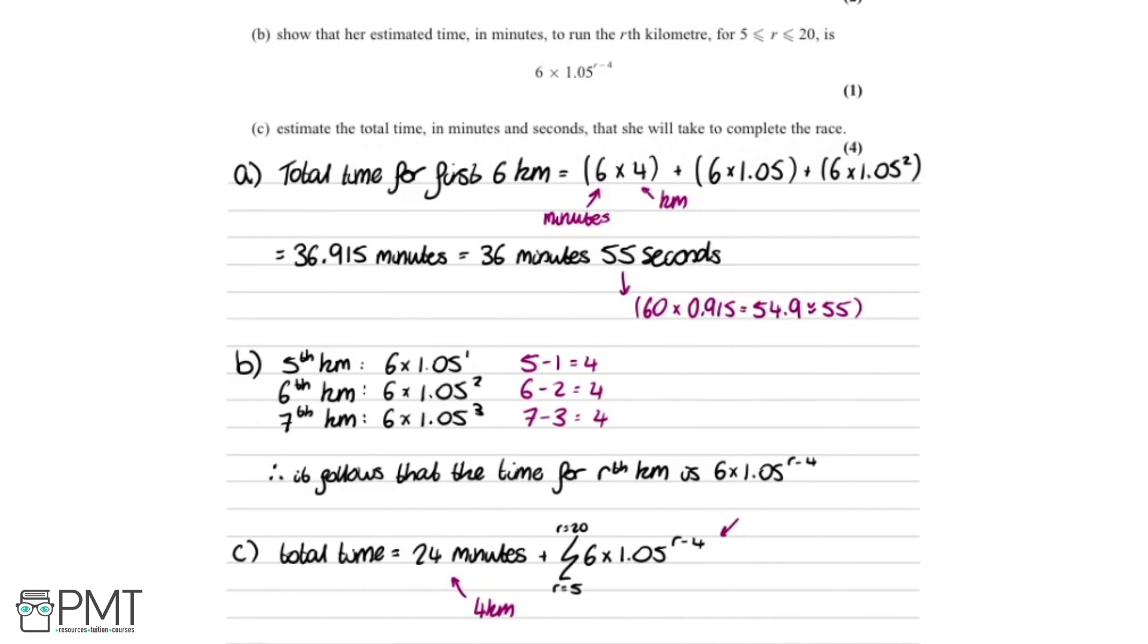So now the last thing to do is evaluate all this. This right here is actually a geometric series. To do that we need to know the first term. Well, the first term is going to be when r is 5, so 5 minus 4 is 1, so that's 6 times 1.05, which equals 6.3. The common ratio is 1.05, because for each kilometer that she's running we're multiplying by 1.05. And n is going to be 16, because we've got 20 kilometers in total and 4 kilometers here, so this is evaluating 16 kilometers.